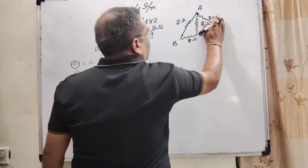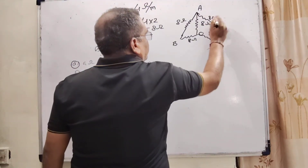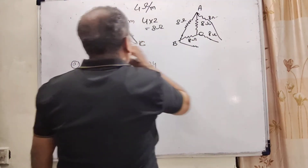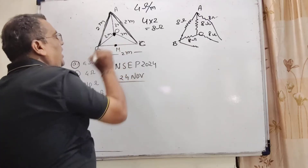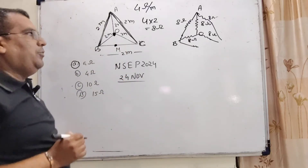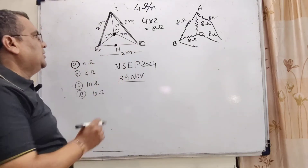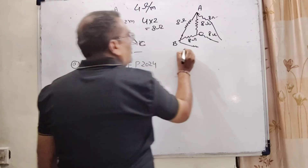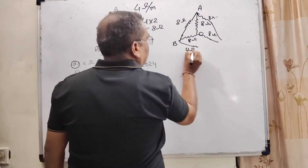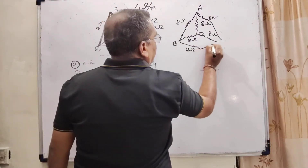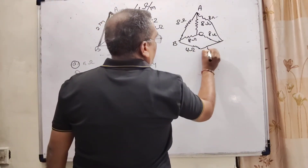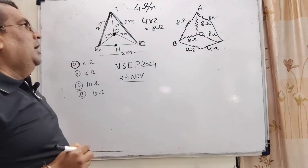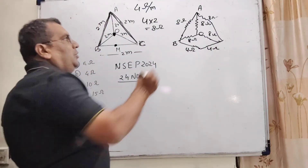M is the midpoint of side BC, so the resistance of BM is half of BC, that is 4 ohm, and MC is also 4 ohm.